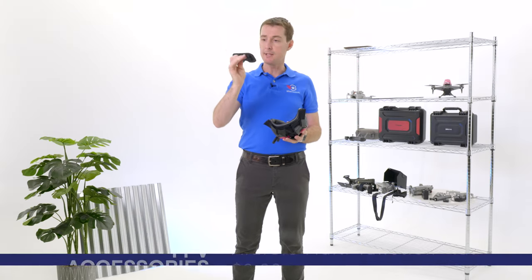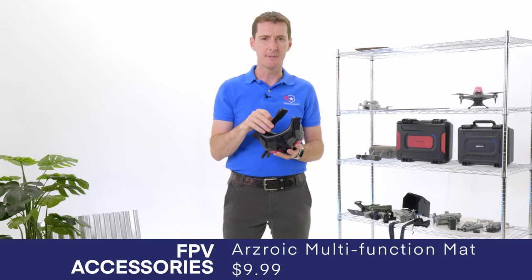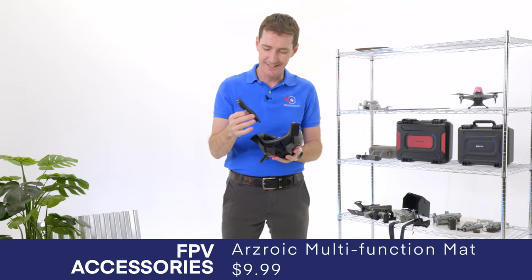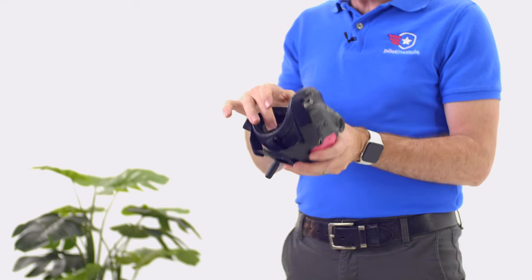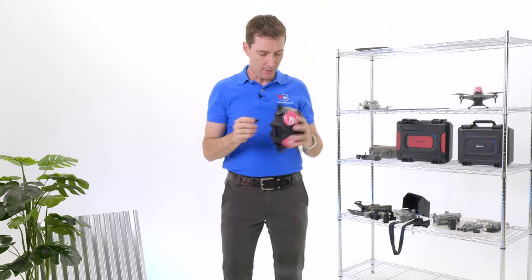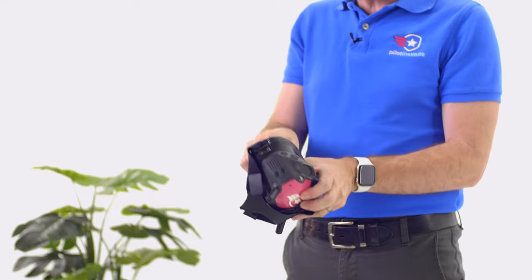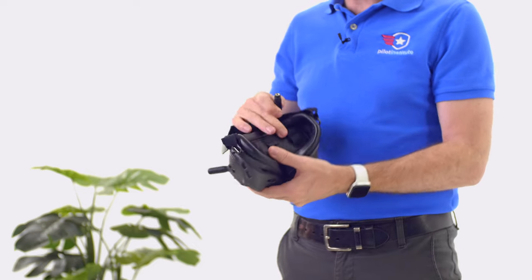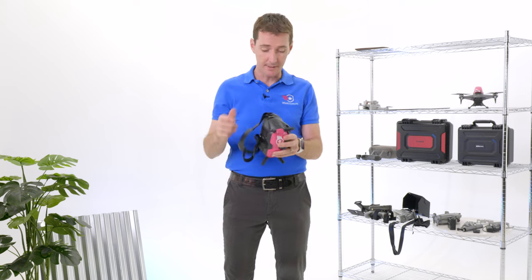This right here is $10, made by Arxoid. I don't know how you even say that. It's a terrible name for a company, sorry. But this has the ability to hold your antennas. These little cylinders go right in here. This has the ability to hold your antennas and also protect the back of your goggles. To me, this is well worth the $10.